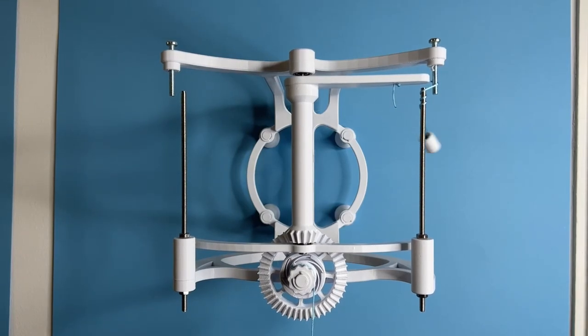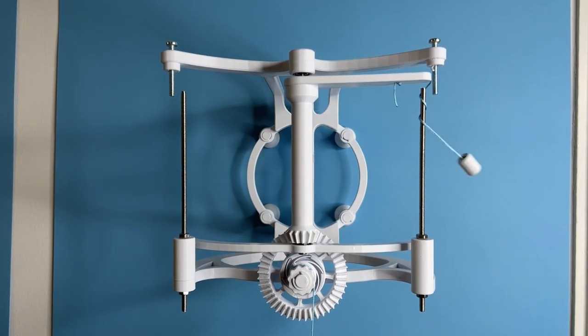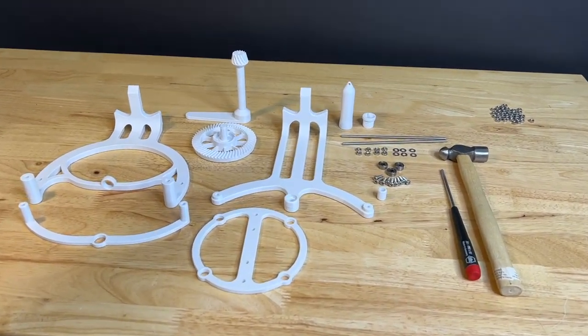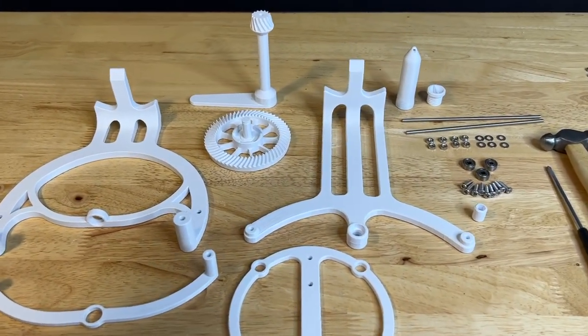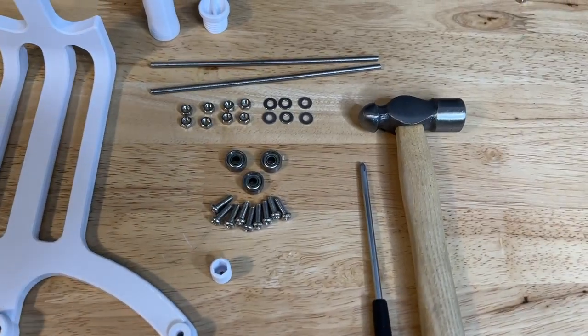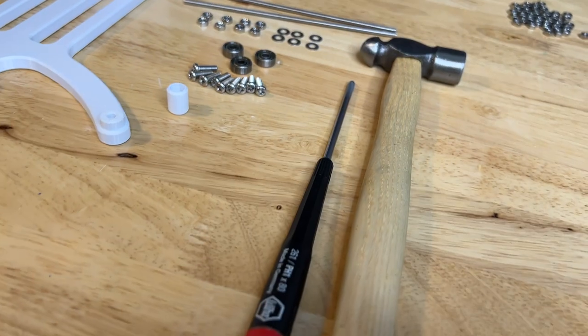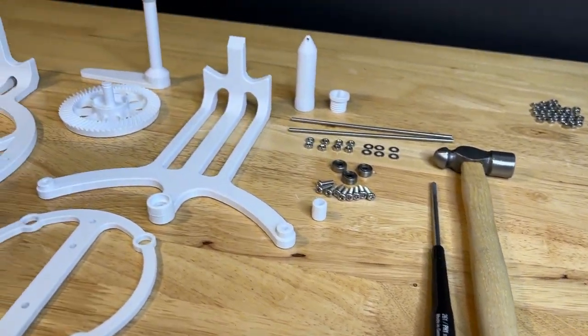In this video, we're going to be talking about how to assemble the flying pendulum escapement. All the files can be downloaded from jbvcreative.com. If you haven't yet, get those files printed. You will need some additional parts for this escapement mechanism. The full parts list is included in the download package and you will need a hammer and a screwdriver.